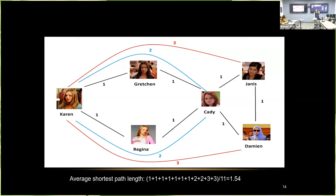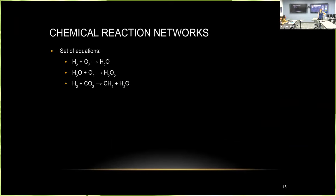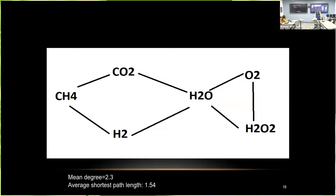Looking at these numbers gives us a more rigorous way of understanding the structure, shape, and dynamics of a network. You can actually do the same thing with chemical reactions. Take a simple set of equations and represent them as a network by assigning each individual species a point and connecting them based on what reactions they co-participate in. This gives the exact same network shape — a mean degree of 2.3, meaning each species on average reacts with 2.3 others, and an average shortest path length of 1.54.